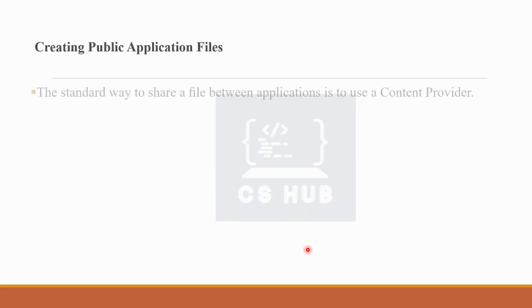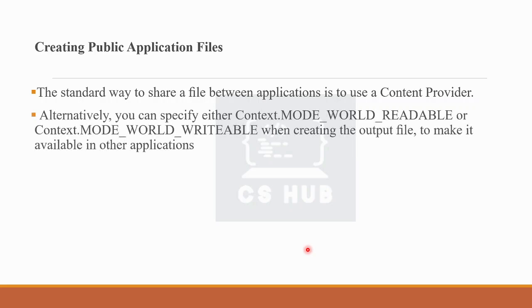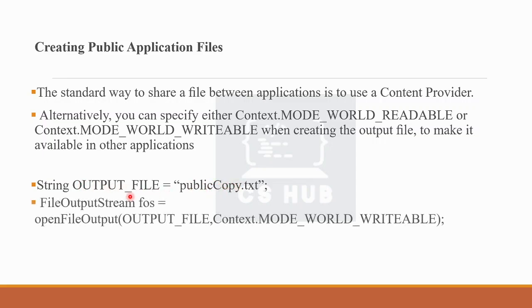To make files public, you use MODE_WORLD_READABLE or MODE_WORLD_WRITABLE. For example: FileOutputStream fos = openFileOutput(fileName, Context.MODE_WORLD_WRITABLE); or Context.MODE_WORLD_READABLE. This allows the files to be visible and accessible to other applications, making them public application files.